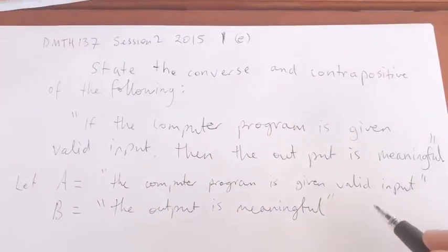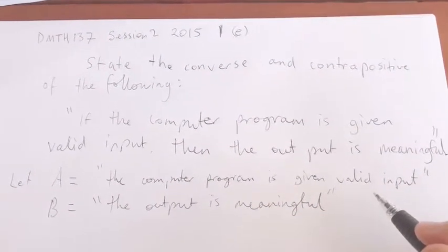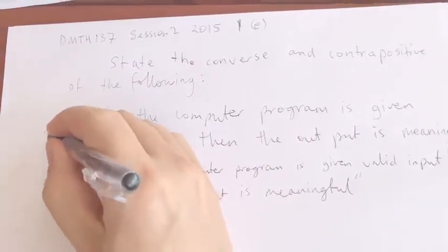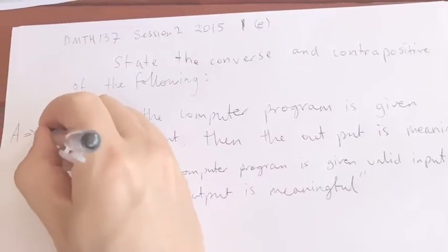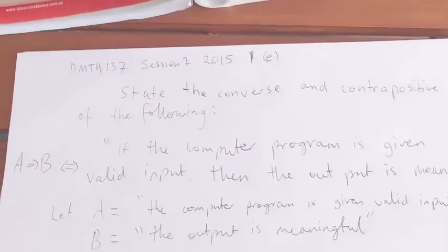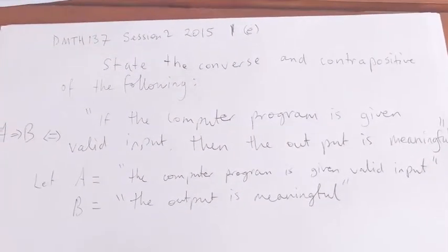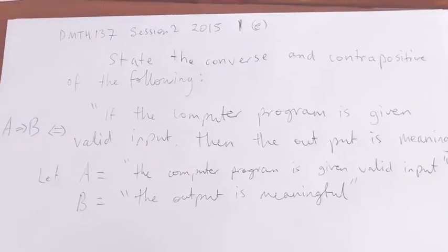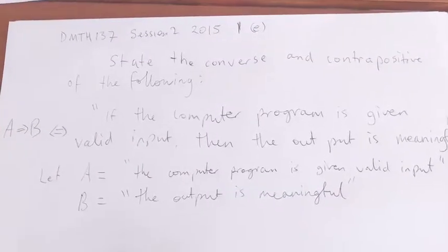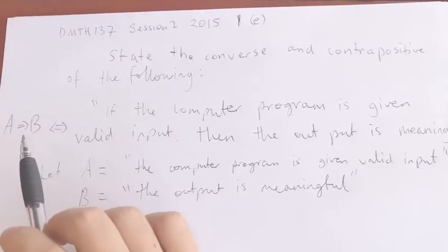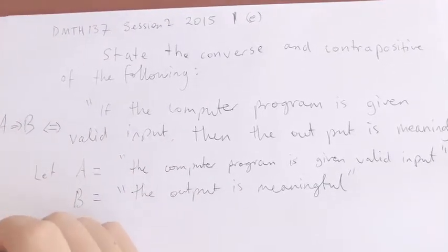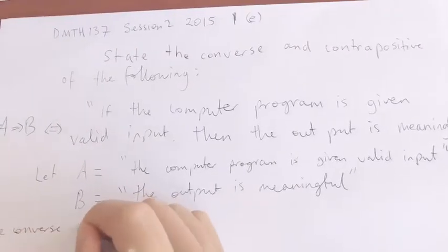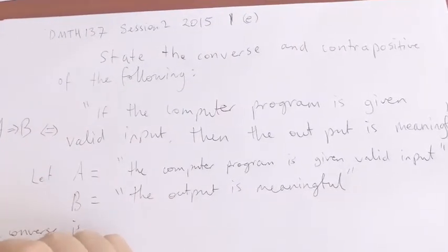So then now our statement is equivalent to A implies B. Okay. So the contrapositive, oh sorry, the converse, the converse is, the converse of A implies B is defined to be B implies A. So the converse is B implies A.